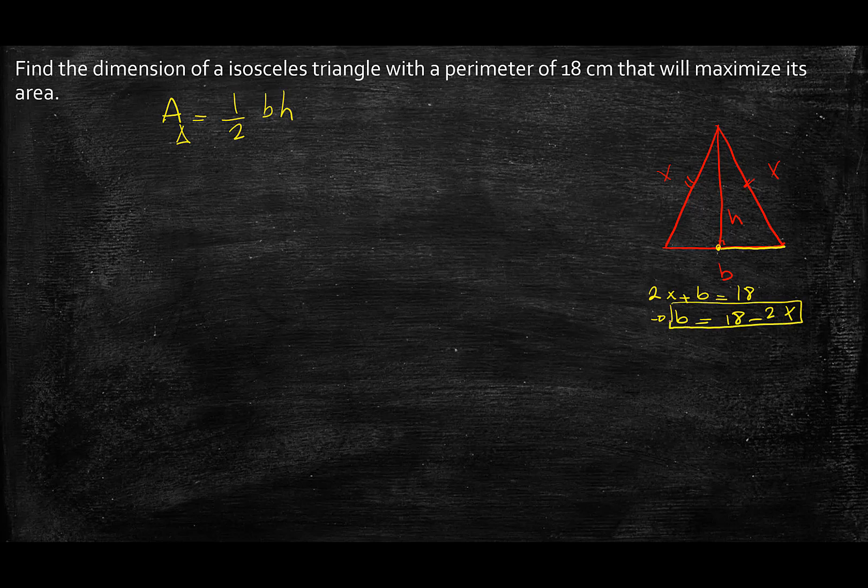So I wrote b in terms of x, but not in terms of h. Now if I could write h in terms of x as well, my whole area function is going to be in terms of x and I can start taking the derivative. Now if I looked at this as a right angle triangle, which it is, I can actually relate this part using Pythagorean theory. Relate h, x, and b together.